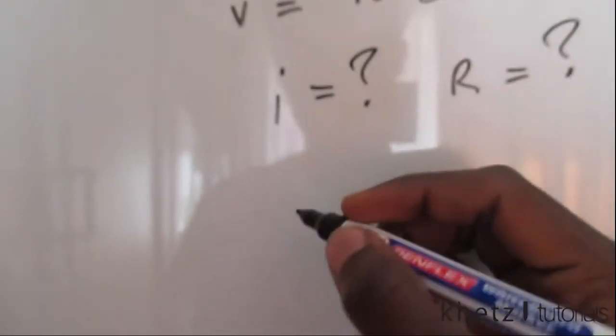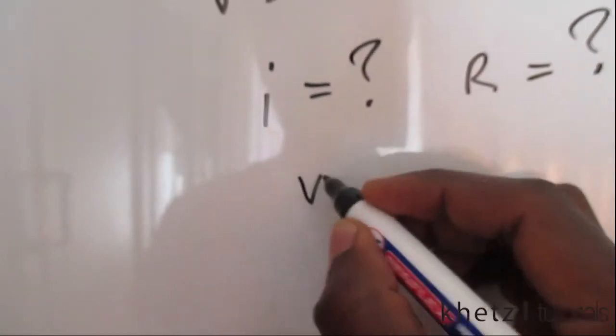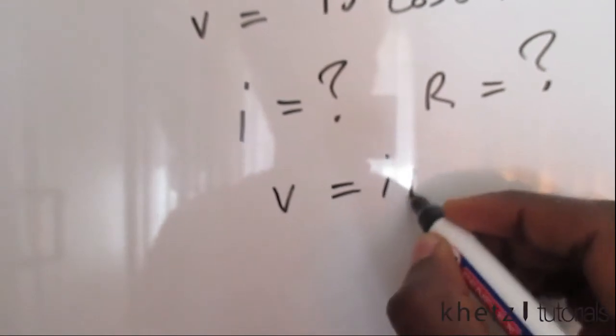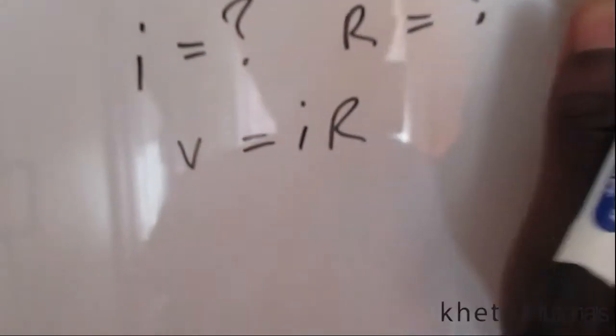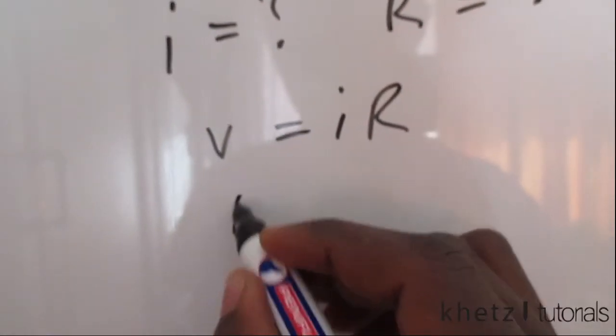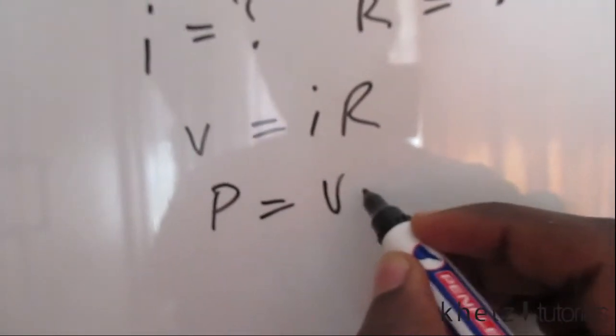So here are the formulas which we'll be using: from Ohm's law V equals IR, and the power formula which says P equals VI.